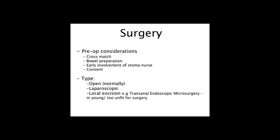Before starting surgery, it's important to consider blood loss, so cross-match is needed. Bowel preparation ensures the bowel is clear of faeces - three clean preps followed by a phosphate enema on the day, plus IV fluids. Also involve the stoma nurse early and explain to the patient they may require a stoma. Surgical approaches include open surgery, which is currently the norm, laparoscopic surgery, and in young patients or those unfit for open surgery, local excision via the anus with transanal endoscopic microsurgery.